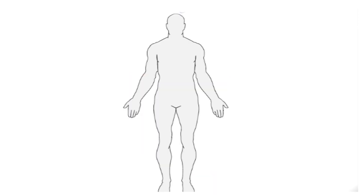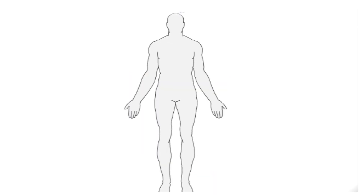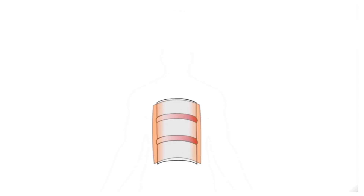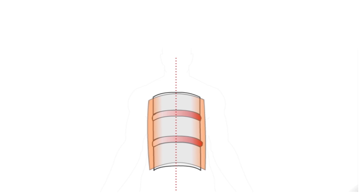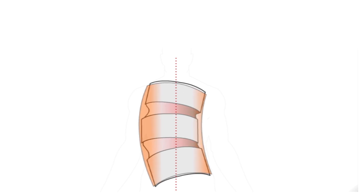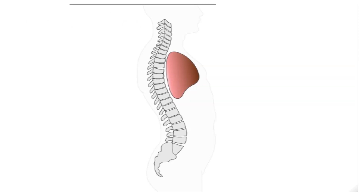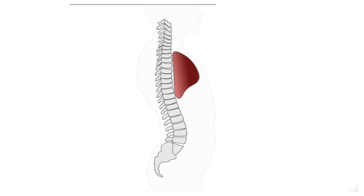Skeletal problems also occur in people with Marfan syndrome, who are frequently tall and skinny. As bones grow, they pull on weak microfibrils, and the ligaments cannot keep vertebrae in line. A side-to-side curve of the spine is called scoliosis. The spine may also bend forward or backward from its natural curvature, which can impinge the lungs and impair breathing.